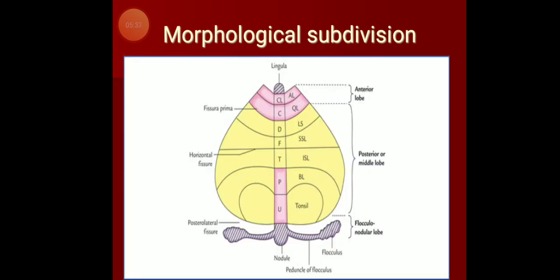In the figure, the grey part represents the archicerebellum. Lingula plus the flocculonodular lobe is designated as archicerebellum. Archi means it is the oldest, the first part to develop during evolution. The initial and most important function assigned was equilibrium — maintenance of equilibrium and tone and posture of trunk muscles. Since it is connected to the vestibular nucleus, archicerebellum is also termed vestibulocerebellum.